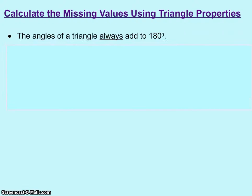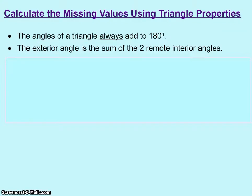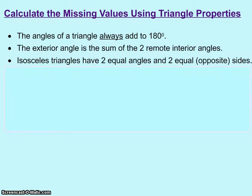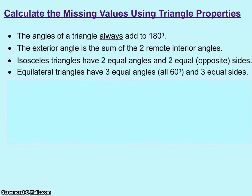The main things we're going to be talking about in this video are that the angles of a triangle always add up to 180 degrees. The exterior angle is the sum of the two remote interior angles. Isosceles triangles have two equal angles and two equal opposite sides. And equilateral triangles have three equal angles, all of them being 60 degrees, and three equal sides.